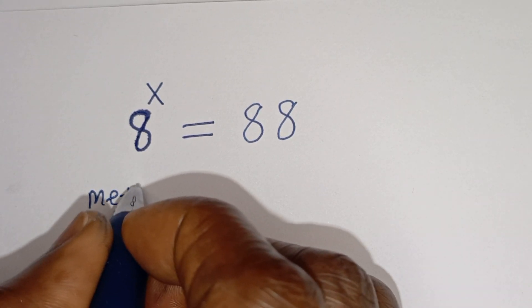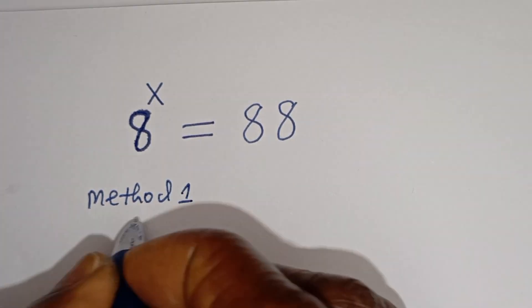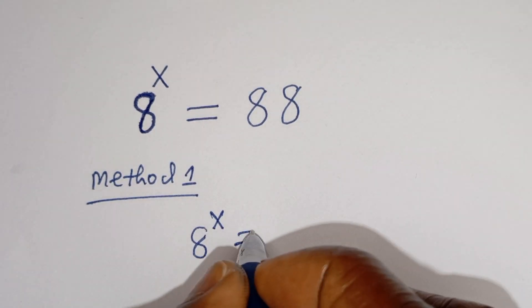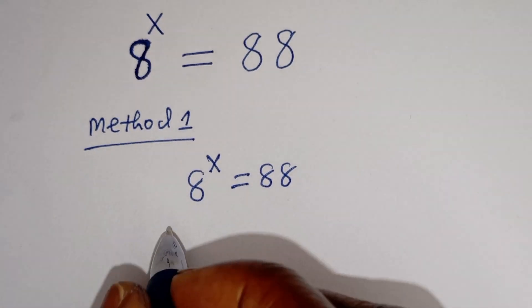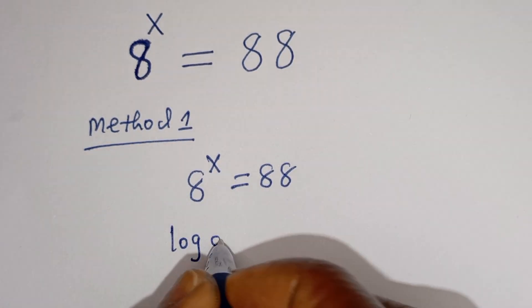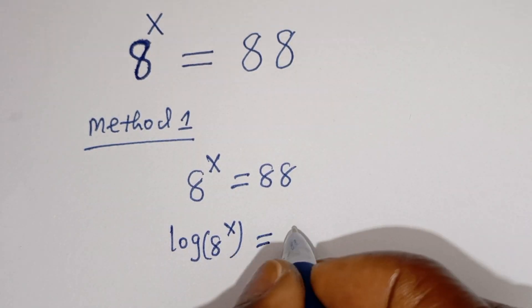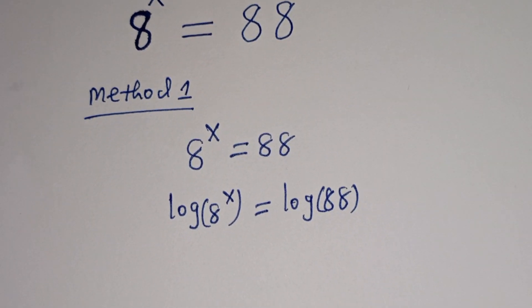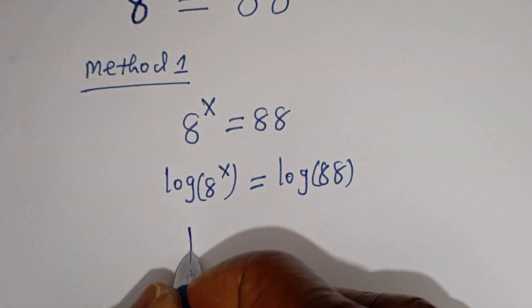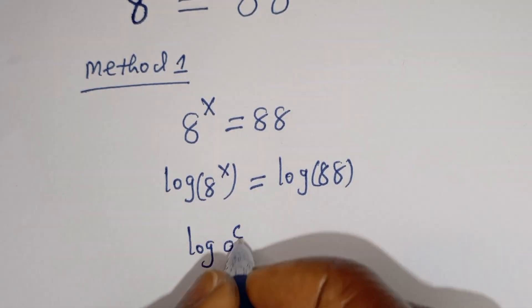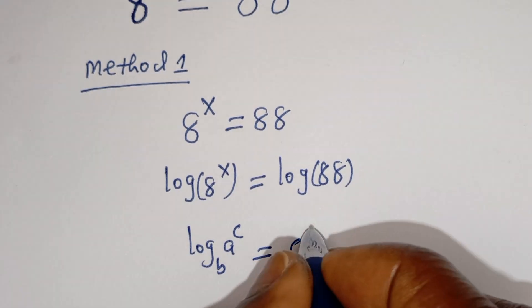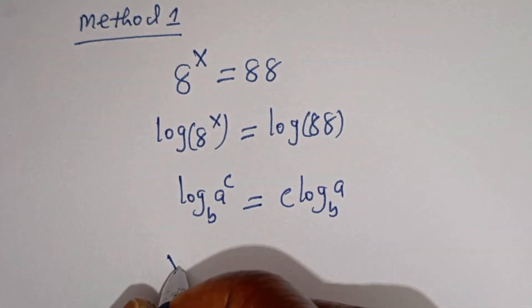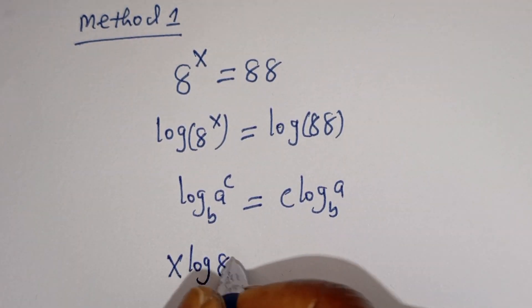Method 1. We have 8 to the power of s is equal to 88. Now let's take the log of both sides. We have log 8 to the power of s is equal to log 88. Take note that if you have log a to the power of c, base b, this is equal to c times log a base b. So this can be written as s log 8 is equal to log 88.